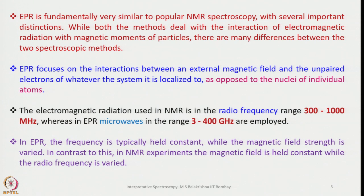EPR is fundamentally very similar to popular NMR spectroscopy, with several important distinctions. While both methods deal with the interaction of electromagnetic radiation with magnetic moments of particles, EPR focuses on the interaction between the external magnetic field and the unpaired electrons of the system, as opposed to the nuclei of individual atoms.